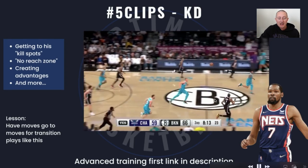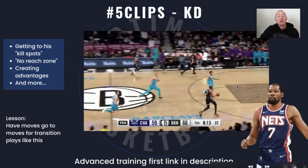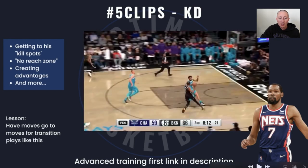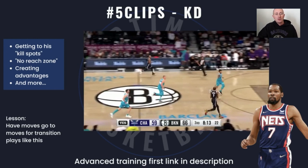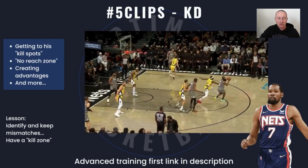Now we're looking at a clip against Charlotte. In transition, a lead defender like Bridges will aggressively sprint at the basketball and try to grab it. You need to have a couple of no-reach zones where defenders can't get the ball. You can go with a high rip, step across the defender and finish on the other side, or dip your inside shoulder, protect the ball on your outside shoulder, and go up for a layup. The mistake I see a lot is the basketball exposed right in front of your torso, letting the defense grab it.